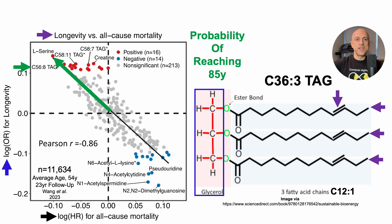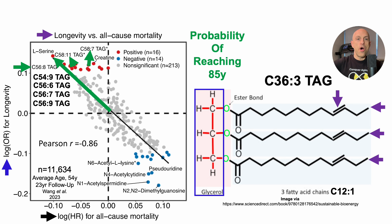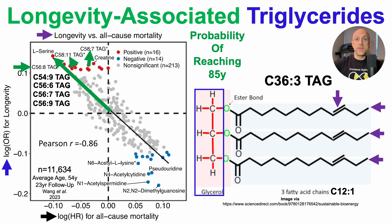It's not just the C56:8 triglyceride that's associated with an increased probability of reaching 85 years. There are others — including, among the red dots in the upper left quadrant, four more: C54:9, and then C56 with 6, 7, or 9 double bonds. From these data, we can see there are indeed longevity-associated triglycerides. I'm not saying we should have high total triglycerides, but this data suggests that having certain triglyceride species relatively high while keeping total triglycerides relatively low may be a good strategy for reaching at least 85 years.